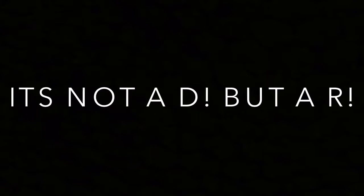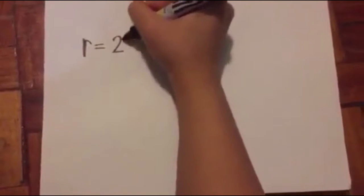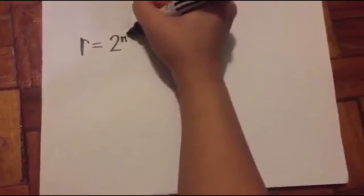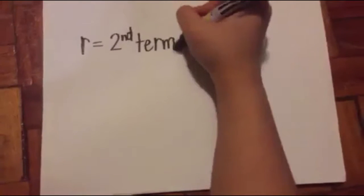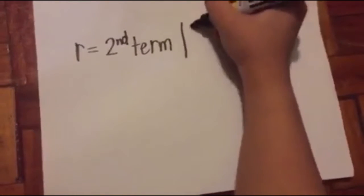In arithmetic sequences, d represents the difference. We don't have a difference here because it's not arithmetic, it's geometric, so it is called a ratio. An example of the formula for your ratio is second term divided by your first term.